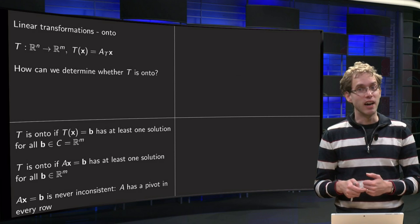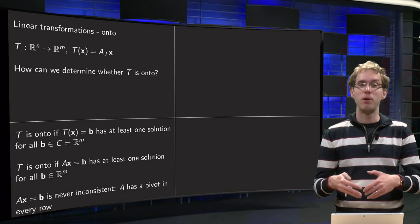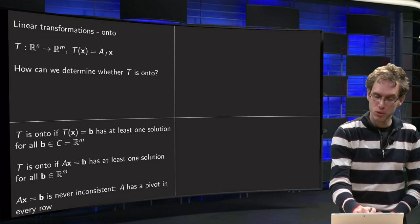So that's a really easy criterion. So let us take some matrix and see whether you have a pivot in every row, and that tells you whether your transformation is onto or not.